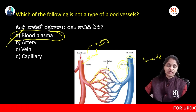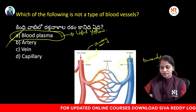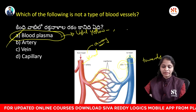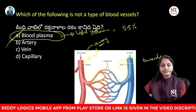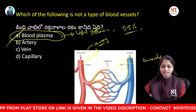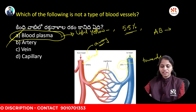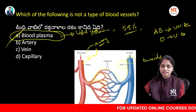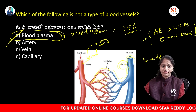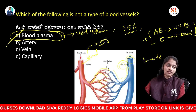Blood plasma is the liquid component of blood, appearing in a light yellow color. Approximately 55% of blood is plasma. Regarding blood groups, blood group AB is called the universal recipient and blood group O is called the universal donor.